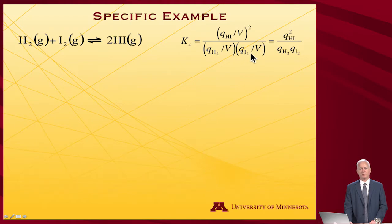And so I will note that volume drops out in this case, right? I've got a 1 over V squared in the numerator, I've got two 1 over V's in the denominator. It's just ratio of partition functions.